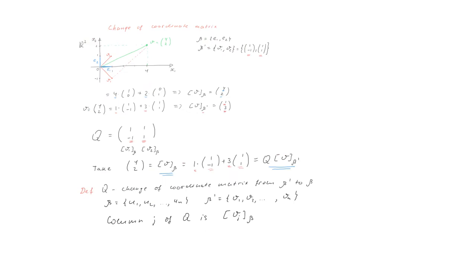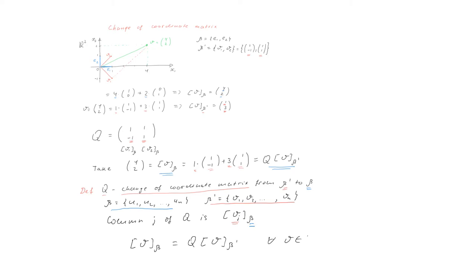Let us now look at the general definition. Q is the change of coordinate matrix from beta prime to beta, when beta is one basis and beta prime is another basis. The columns of Q are nothing else but the vectors from the basis beta prime written down in the basis beta. Then we have the general relation that the coordinates of vector v in the basis beta equals Q multiplied by the coordinates of v in the basis beta prime, for any vector v in the vector space.